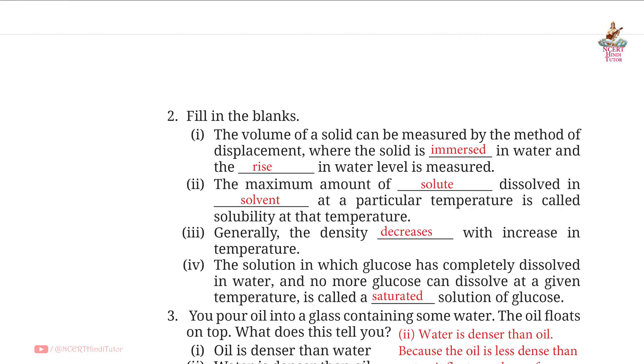Question 2: Fill in the blanks. First: The volume of a solid can be measured by the method of displacement where the solid is immersed in water and the rise in water level is measured. Second: The maximum amount of solute dissolved in solvent at a particular temperature is called solubility at that temperature. Third: Generally the density decreases with increase in temperature. Fourth: The solution in which glucose has completely dissolved in water and no more glucose can dissolve at a given temperature is called a saturated solution of glucose.